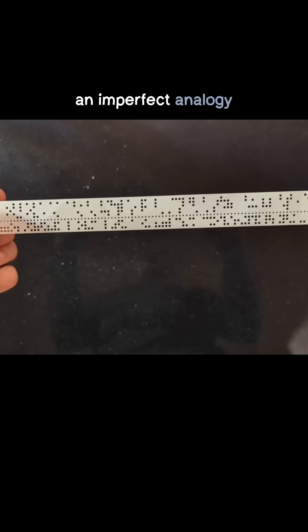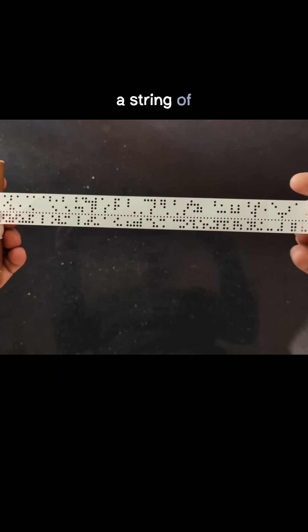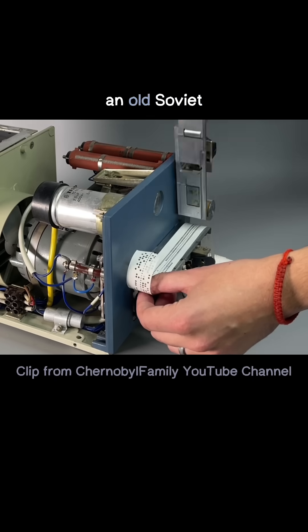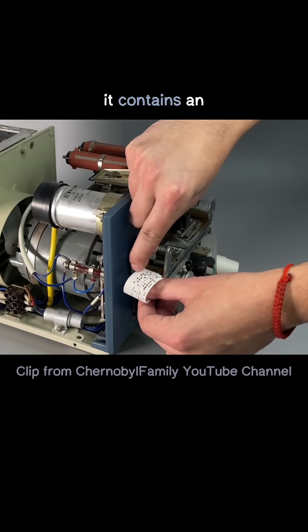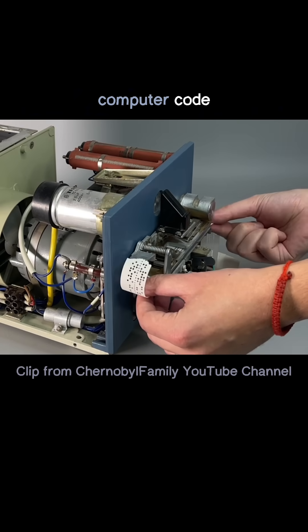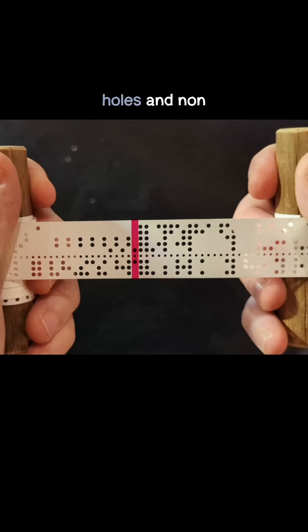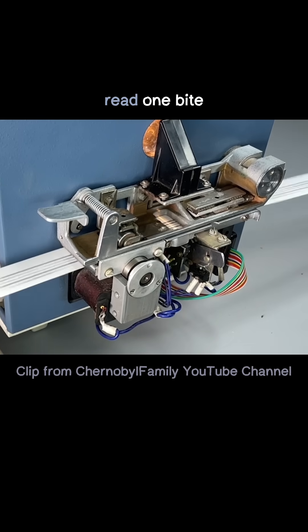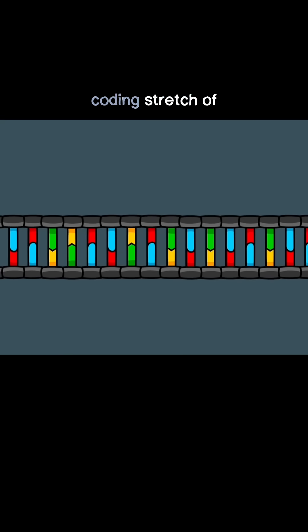As a helpful, but of course imperfect analogy, this here is a string of punched tape from an old Soviet computer. It contains an early version of computer code. Each line of holes and non-holes acts as a byte of digital information that can be read, one byte after the other by a machine, similar to how, in a protein-coding stretch of DNA, each set of three nucleotides acts as a codon that can be read by a ribosome.